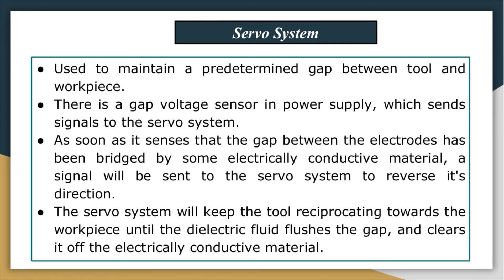Requirements of the servo system include sensitivity to small movement and enough power to work against the weight of the electrode and flushing forces. Electrode re-referencing is needed to accurately compensate for reduced tool length due to tool wear. Otherwise, the length of each successive hole drilled will be shorter than desired. In electrode re-referencing, after drilling a hole the tool is brought back to a reference point from which the depth of drilling is measured.